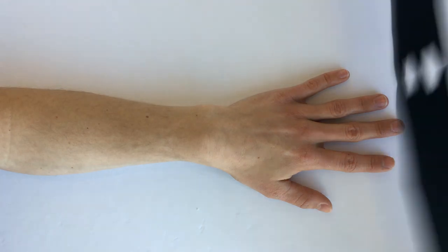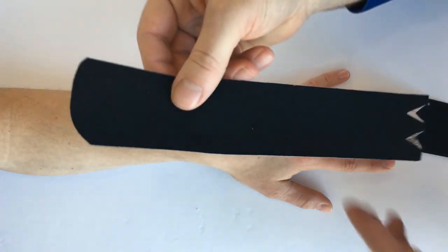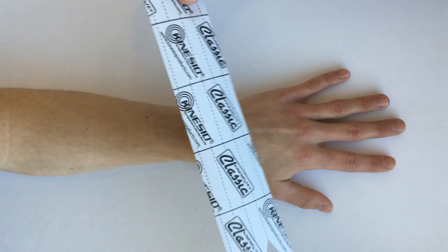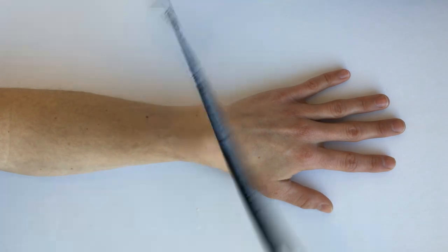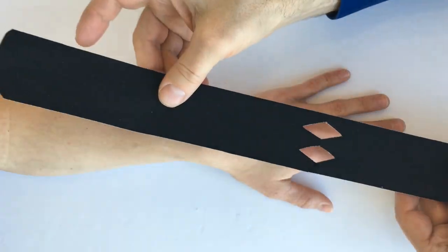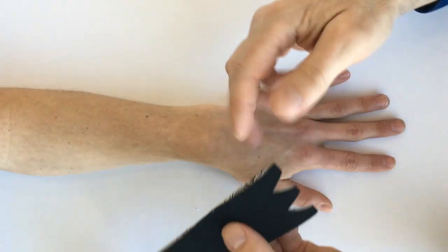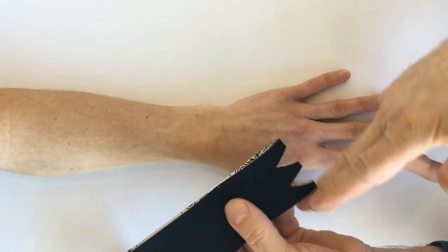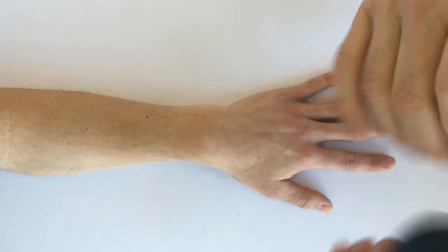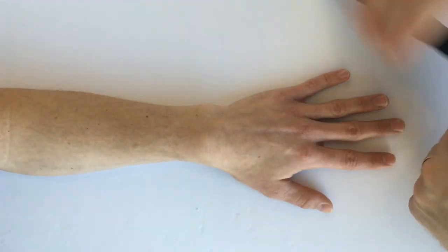One simple way to use kinesio tape for this is to have a strip about 20 inches long. I fold it over in the middle, then with my scissors, cut a couple of diamonds out, and then I have my strip of kinesio tape.